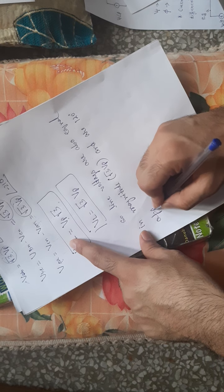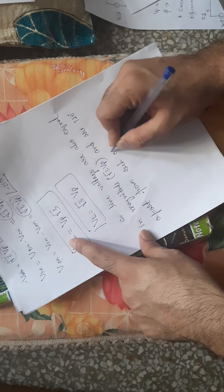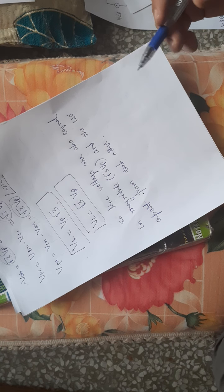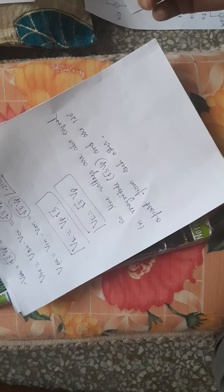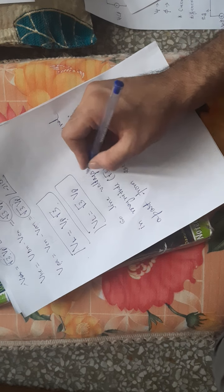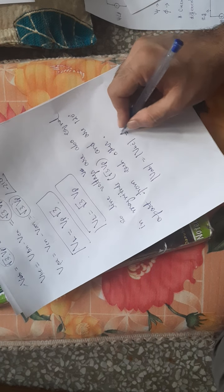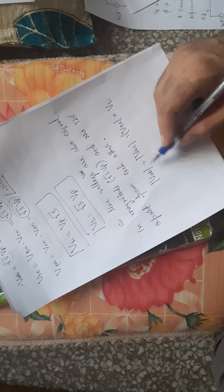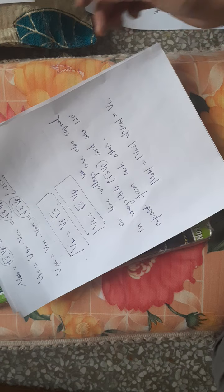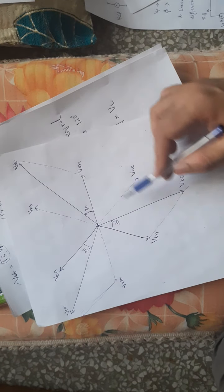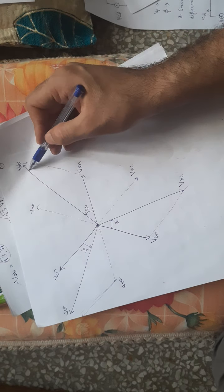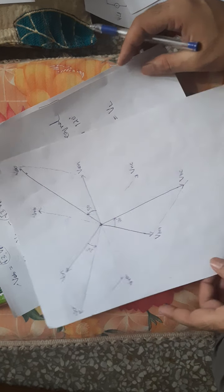The line voltages are equal in magnitude — root-3 times the phase voltages — and are 120 degrees apart from each other. I have shown all three line voltages Vab, Vbc, and Vca in the phasor diagram.